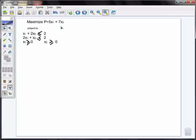We're going to maximize p equals 5x1 plus 7x2, subject to the constraints x1 plus x2 is less than or equal to 2, and 2x1 plus x2 less than or equal to 2.